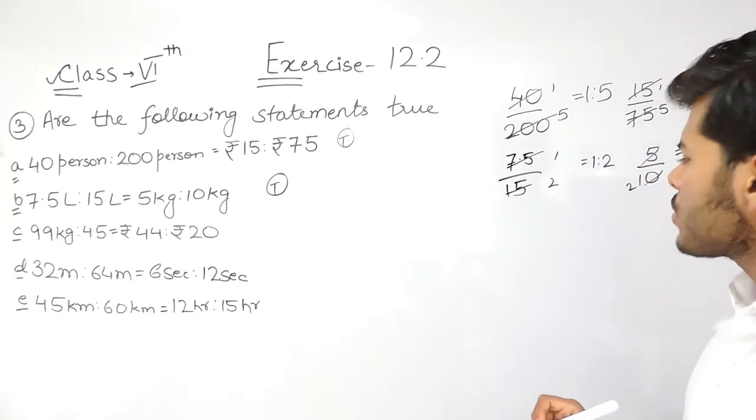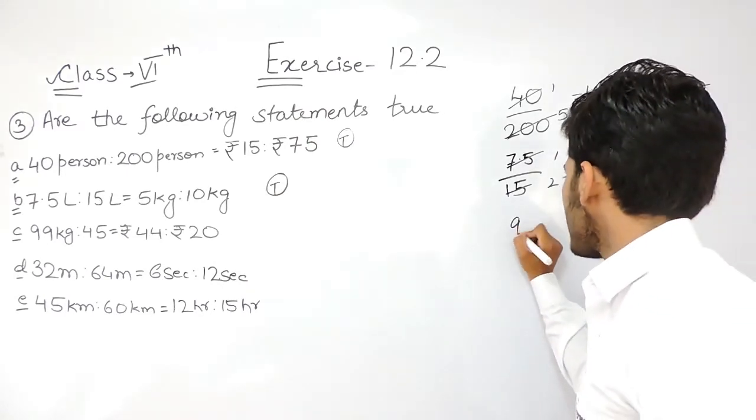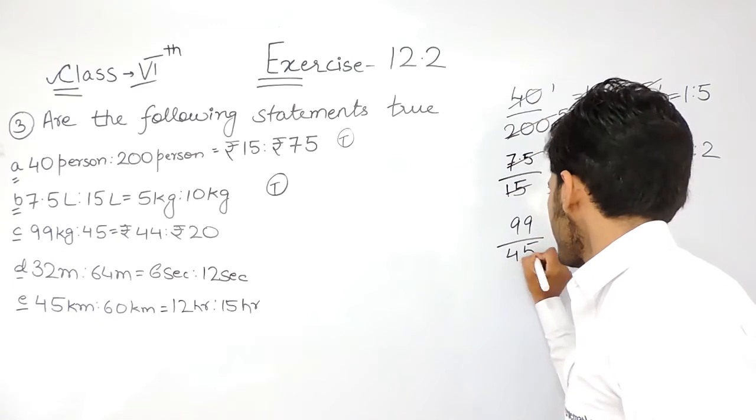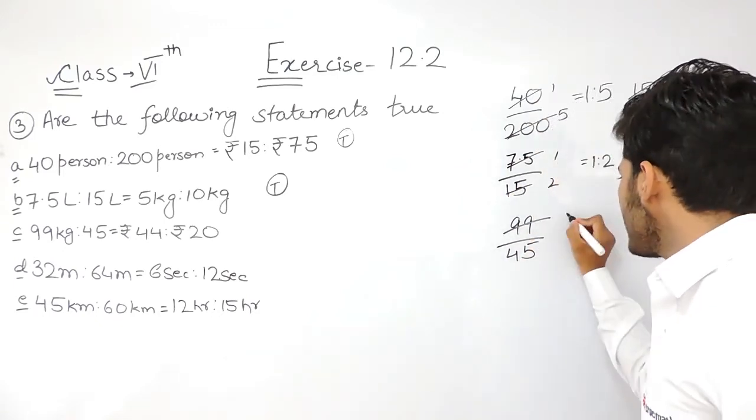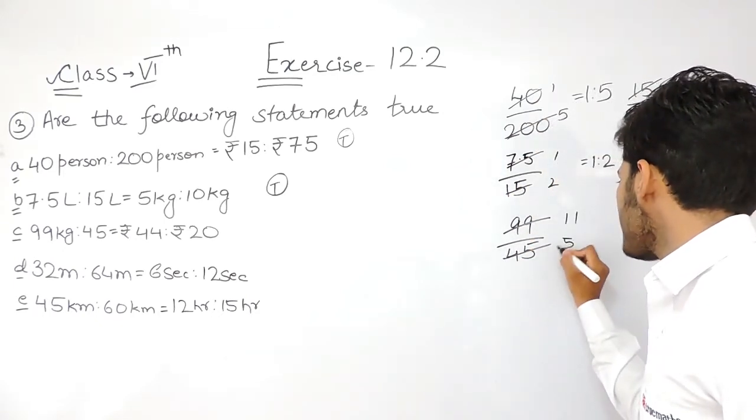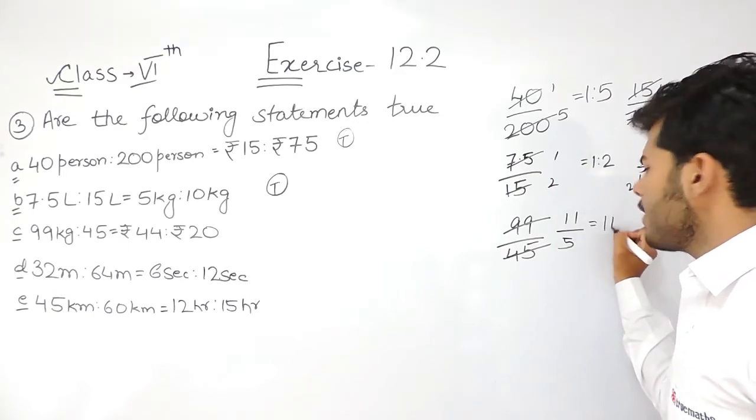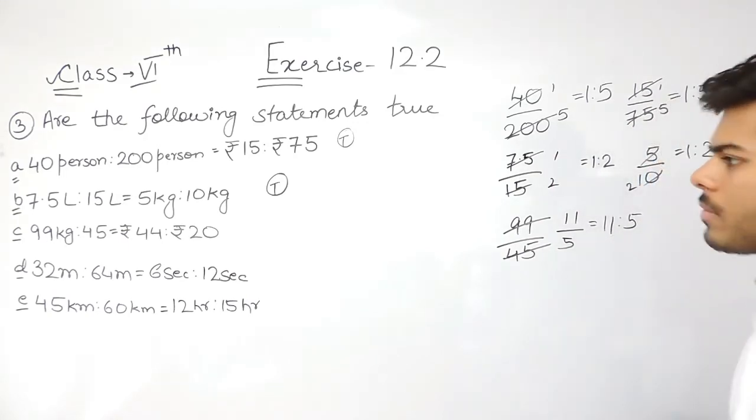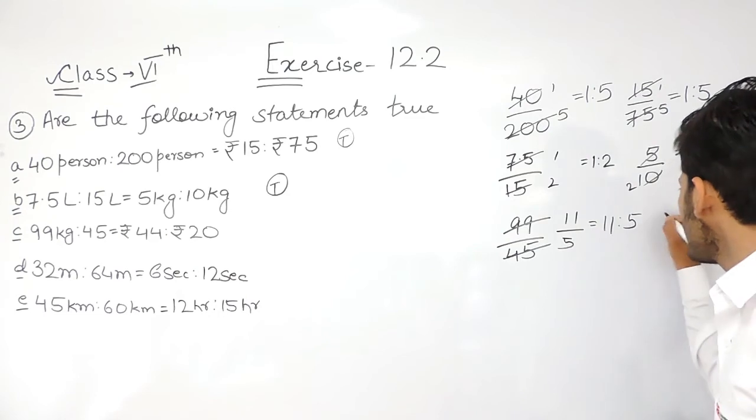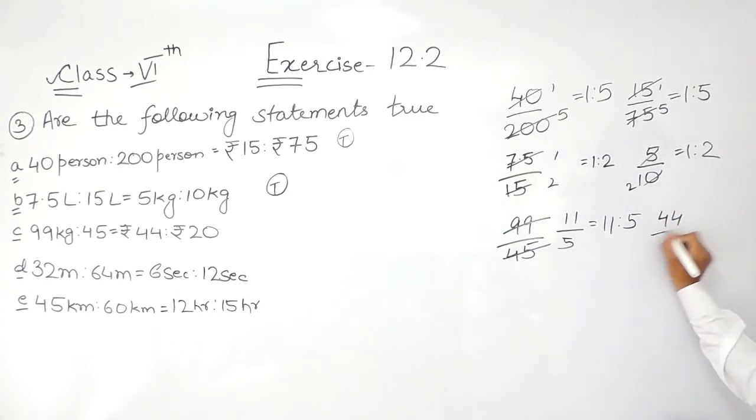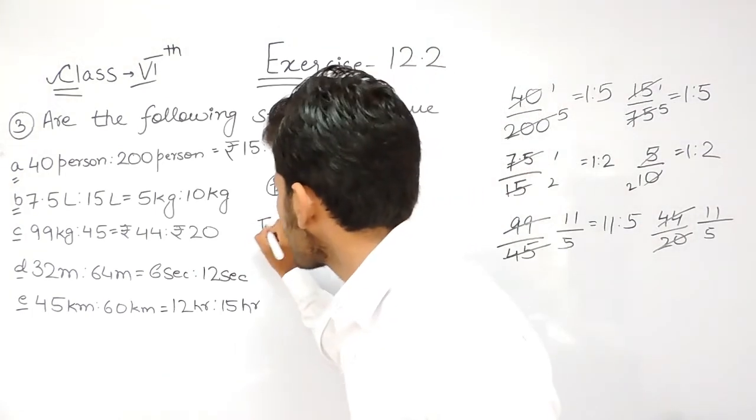Now coming to statement number 3, 99 upon 45, so 9 times 11 is 99, 9 times 5 is 45. The ratio is 11 ratio 5 and it is 44 by 20, so 4 times 11, 4 times 5, that is again 11 ratio 5. So this statement is also correct.